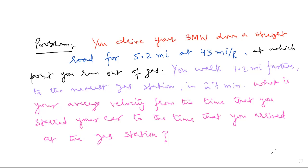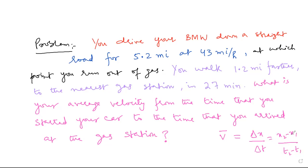We know in motion in one dimension how we define average velocity. We define average velocity, written as v-bar, as delta x over delta t, where delta x is x2 minus x1 over t2 minus t1. x1 is the position coordinate at t1, and x2 is the position coordinate at t2. So simply we need for this question to find the net displacement x2 minus x1 during the interval under question — that is the time you started your car to the time you arrived at the gas station.